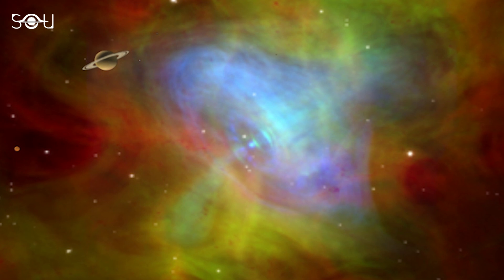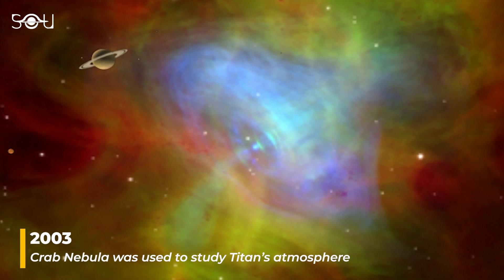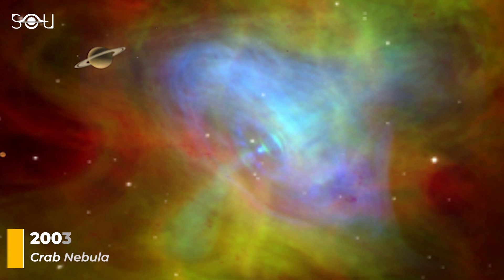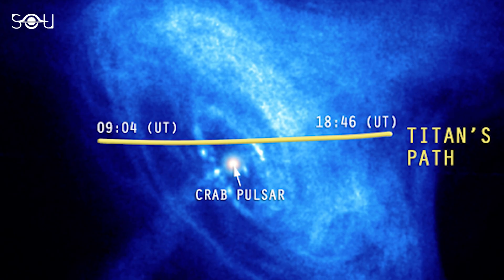Then, in 2003, astronomers seized the rare opportunity when Saturn's largest moon, Titan, passed in front of the Crab Nebula. This event, known as the Occultation, allowed scientists to study Titan's atmosphere in detail.